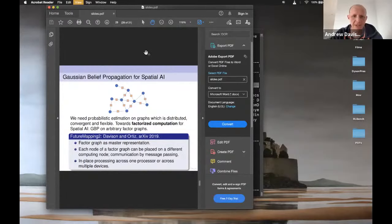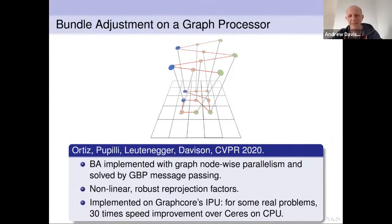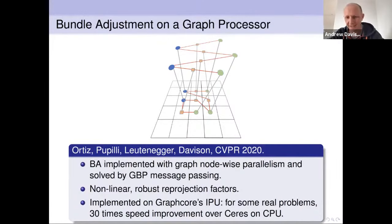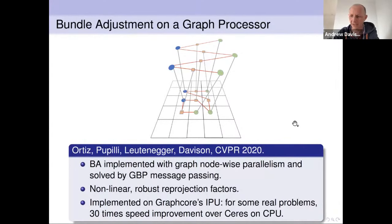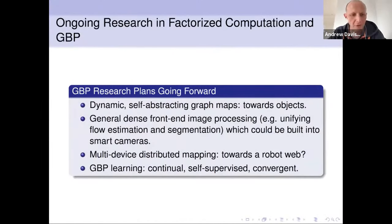The first concrete thing we really did with that algorithm was to implement bundle adjustment — the classic computer vision estimation problem — on a graph processor using Gaussian Belief Propagation, and we've shown we can be incredibly fast. On a single IPU chip for a certain size problem, we achieved 30 times faster than Ceres on a CPU — a highly well-engineered graph optimization library from Google. This is still just preliminary research code and it's already running really, really fast. I have a lot of ongoing research in this area.